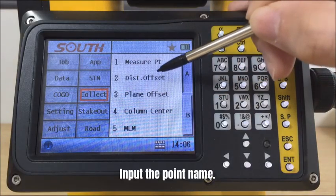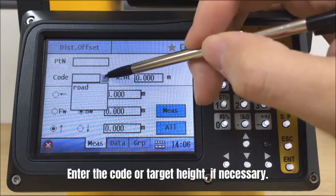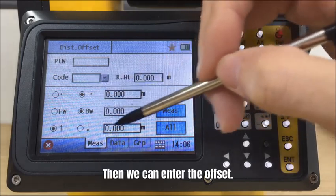Choose distance offset, input the point name. Enter the code or target height if necessary. Then we can enter the offset value.